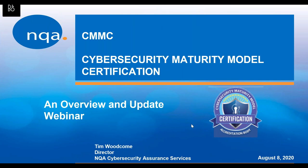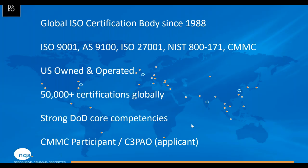I also want to take a quick mention of NQA. For those not familiar, we are a global ISO certification body, been around since 1988. A lot of you probably know us for our work in ISO 9000, AS9100, or ISO 27001. ISO and AS are more in the quality realm, while ISO 27001 gets us into the information or cybersecurity realm. More so these days, we're getting into audits to the NIST 800-171 standard and the CMMC standard, which we're talking about today.